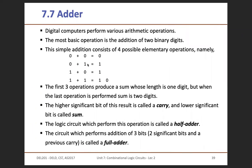There are four possible elementary operations with different outputs. When you add 0 plus 0, you have 0; 0 plus 1, you have 1; 1 plus 0, you have 1. The last case, 1 plus 1, gives you two digits. The first three operations give only a single digit, but in the case of 1 plus 1, you have two digits.